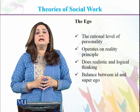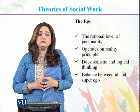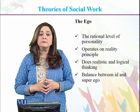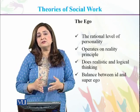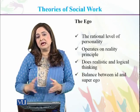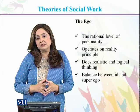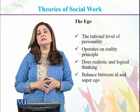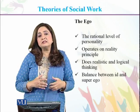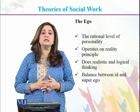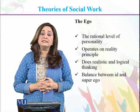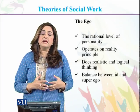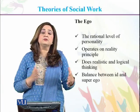The second part of human personality is the Ego. This is the rational level of personality and works on the basis of the reality principle. With the passage of time, through experiences with social institutions — whether educational, family, religious, or economic institutions — every individual develops logical thinking in their personality. This creates a balance between the Id and the Superego.